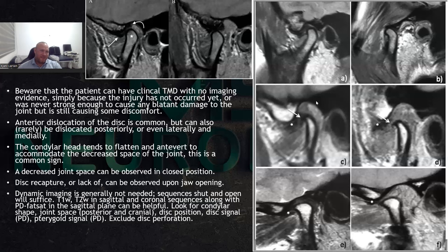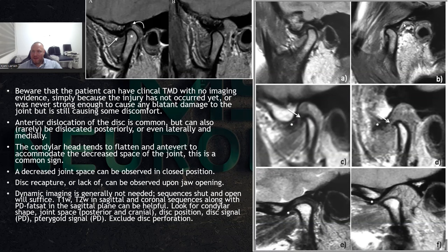Looking at C and D: the condyle is atrophied and clearly deformed, with considerable damage. There's some osteophytic development, and the disc is way in front of the condyle. When they open the mouth, it still stays in front — there's not much movement. The jaw doesn't even come adjacent to the articular process because they can barely open their mouth. This is disc displacement without reduction with significant condylar deterioration.